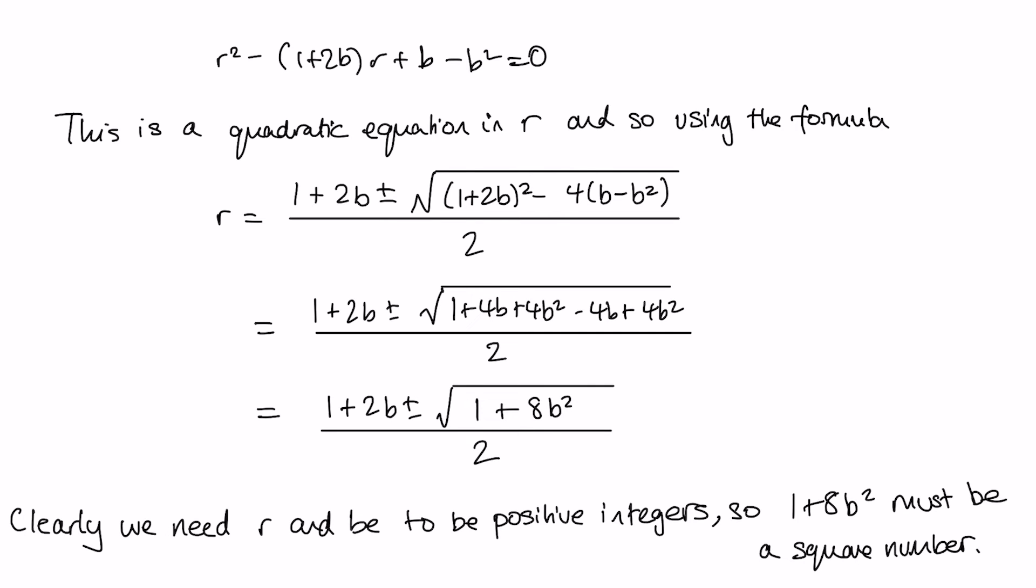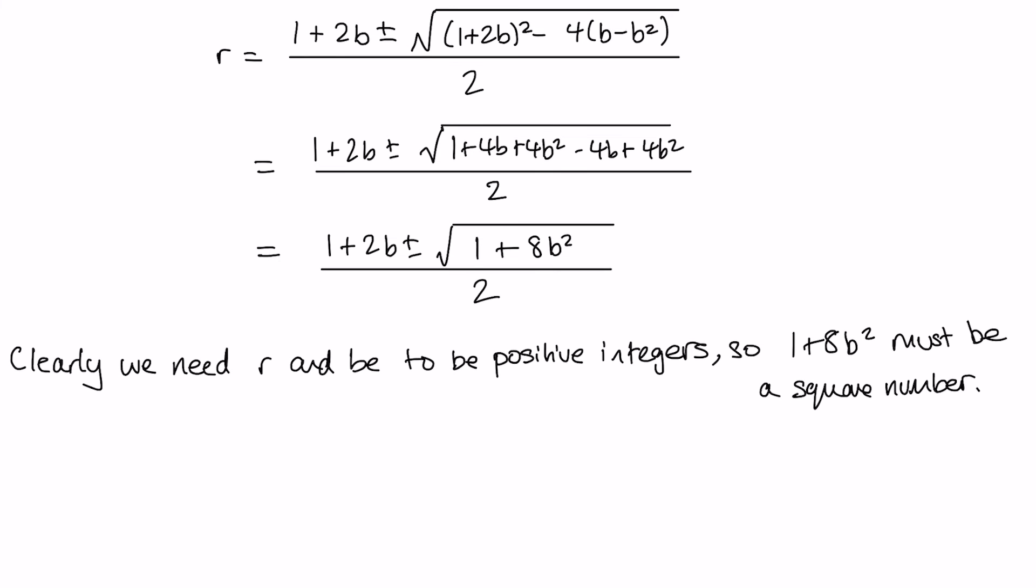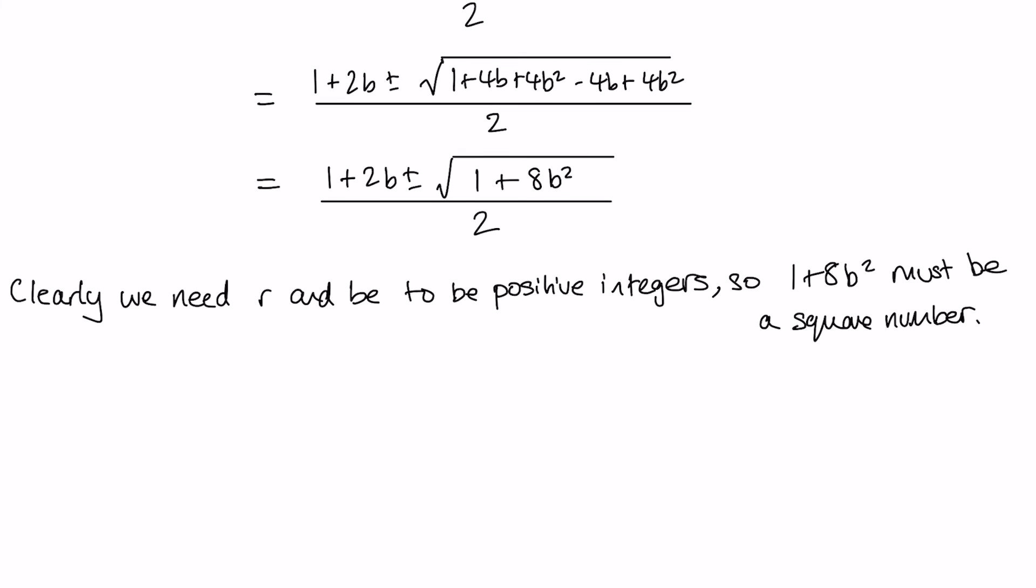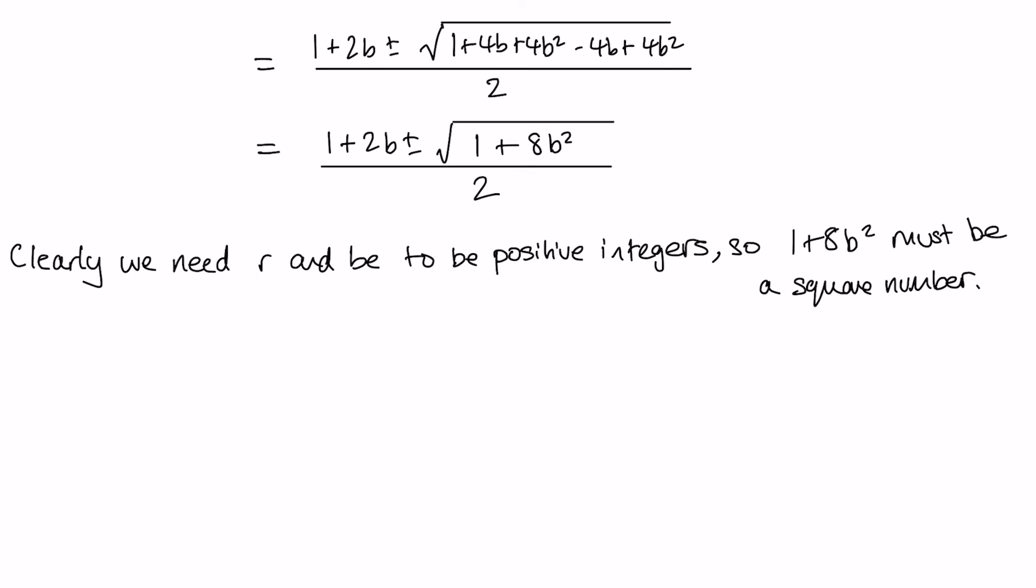Clearly we need r and b to be positive integers, so it must be that 1+8b² must be a square number, so that when I take that square root I get a whole number.